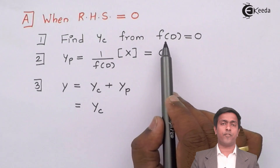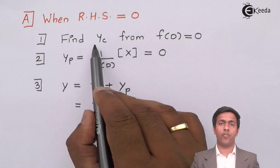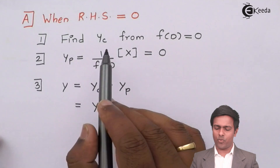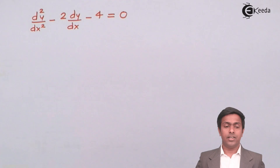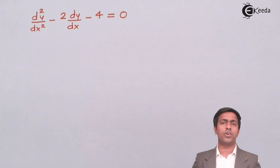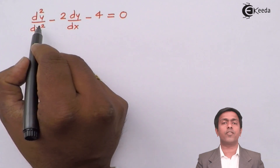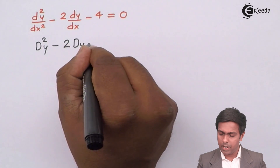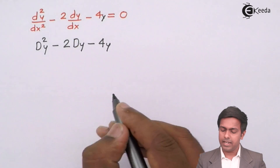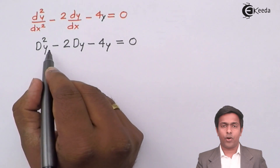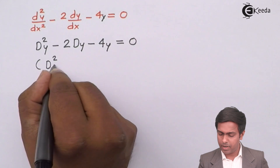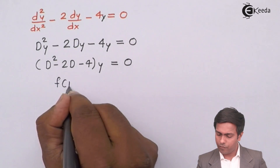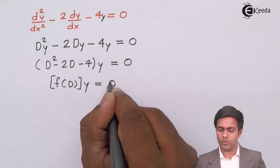For that, you first have to find out f(D). So let's find out f(D) and then find out yc. To get f(D) = 0, we replace the term d²y/dx² with D², and dy/dx with D. So here we get D² minus 2D minus 4 into y equal to 0. Taking y common, we get (D² − 2D − 4)y = 0, and here we get f(D). This is of the form f(D) · y = 0, so f(D) = D² − 2D − 4.